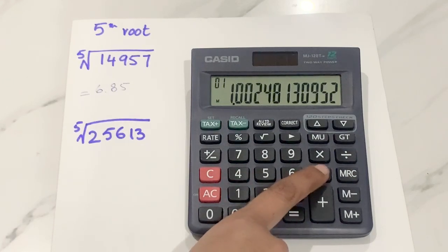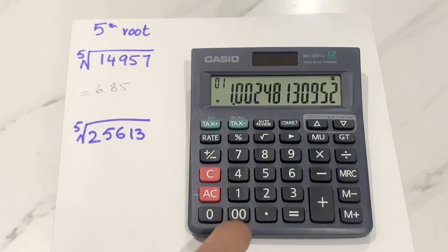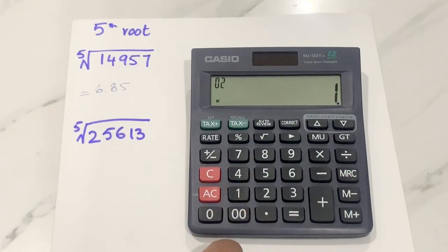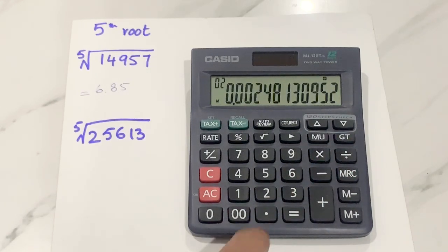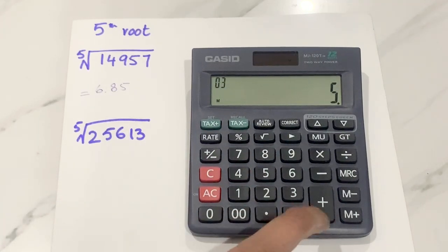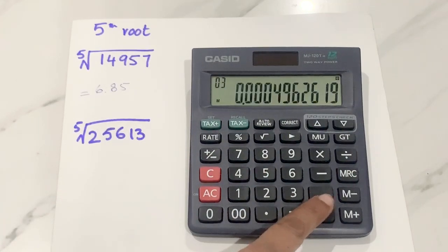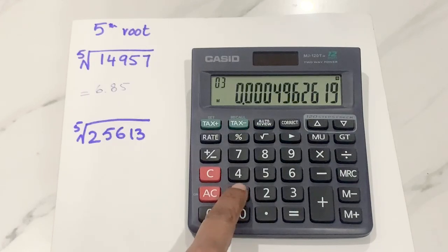After this, I will press the minus sign. Now I will press number 1. Then I will press the division sign. After this, I will press number 5 because it's the fifth root. After this, I will press the addition sign. Now I will press number 1.